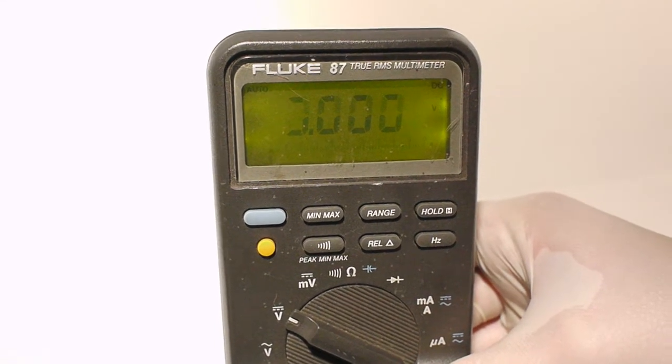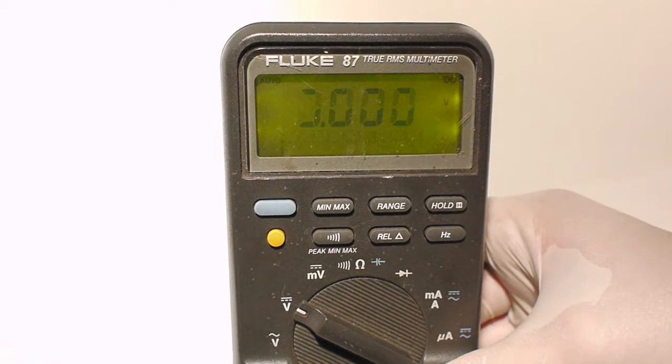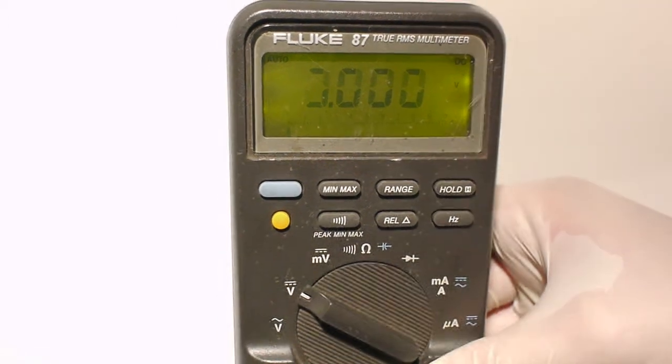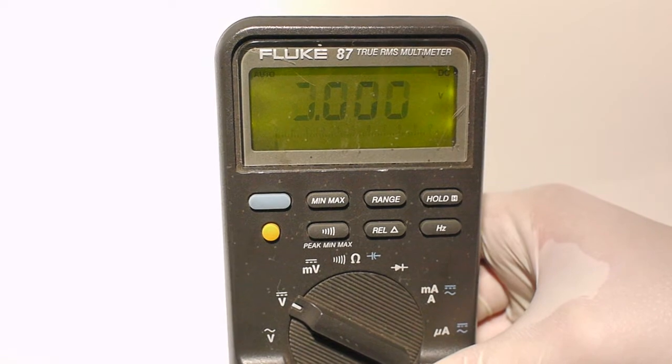Does your Fluke 87 meter look like this? Missing LCD segments, ghosting, it's faded, it's fading, it's gone.